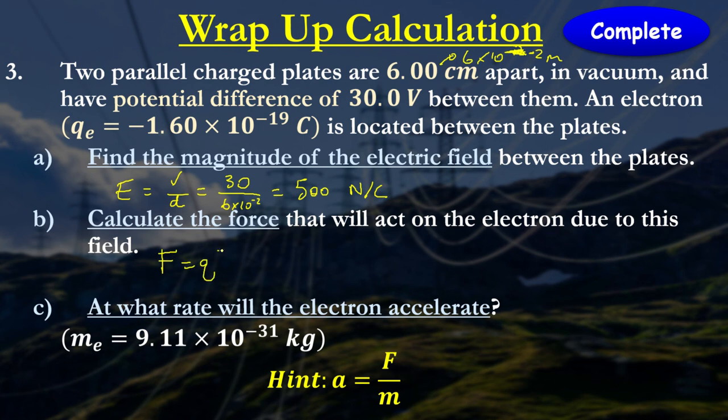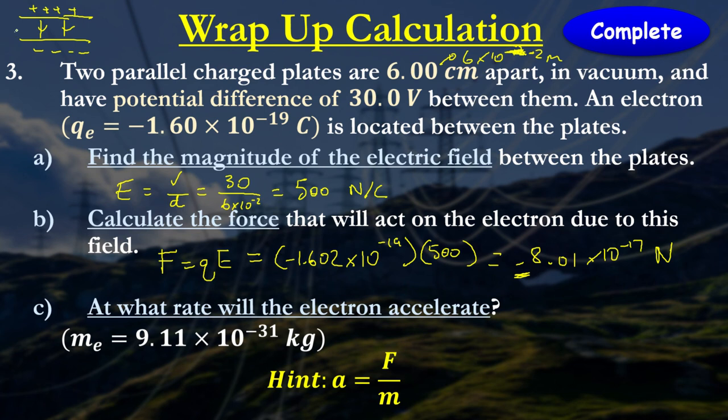Next, we want to calculate the force. I know that the equation is F equals qE. The charge of the electron is here, and the electric field strength is 500. What we get is minus 8.01 times 10 to the power of minus 17, and that would be in newtons.